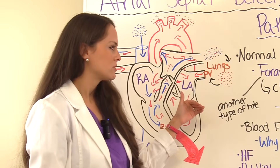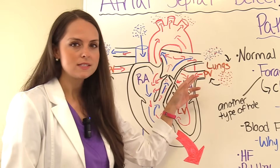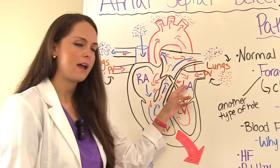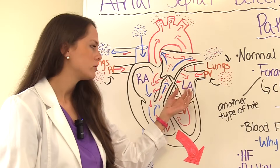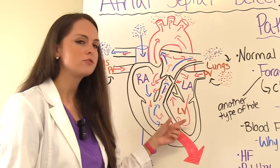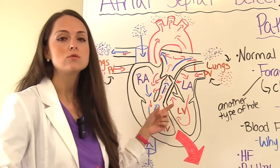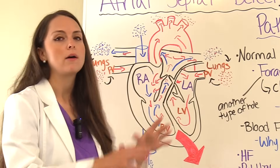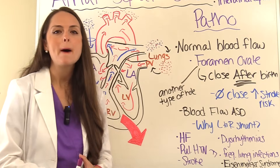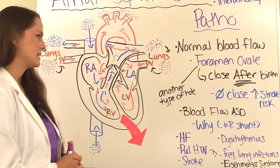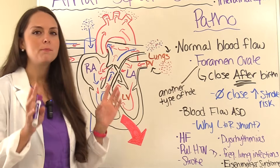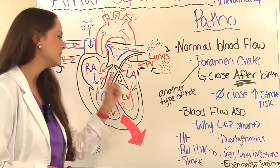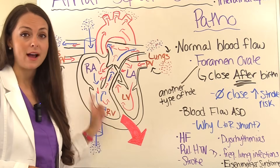After gas exchange has occurred, the blood flows into the left side of the heart through the pulmonary vein into the left atrium. The bicuspid mitral valve opens, blood goes down into the left ventricle, which squeezes it up through the aortic valve, through the aorta, and throughout the rest of the body. After birth, the pressure on the left side of the heart is greater than the pressure on the right side, because the left side has to pump oxygenated blood throughout the entire system.